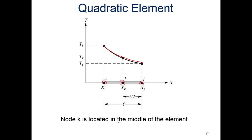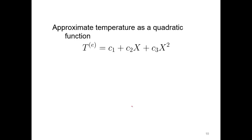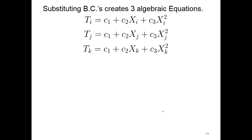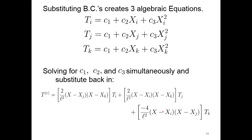Node K is located in the middle of the element. K is located in the middle, L over two, not just some random values. It's actually L over two, one half the length. We're going to approximate the temperature as a quadratic function. We have our boundary conditions. We know the temperature at node I, at J, and we know temperature at node K. Solving for those, we're going to substitute and solve those simultaneously. Then if we rearrange for TI, TJ, and TK, you can imagine what's inside the brackets there. Those are our shape functions.